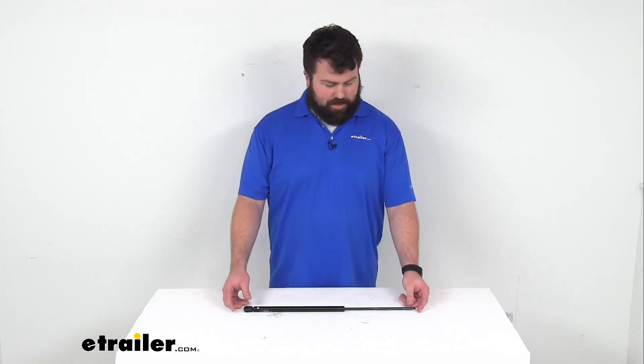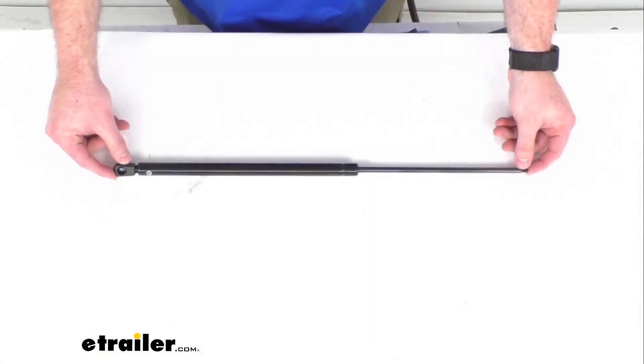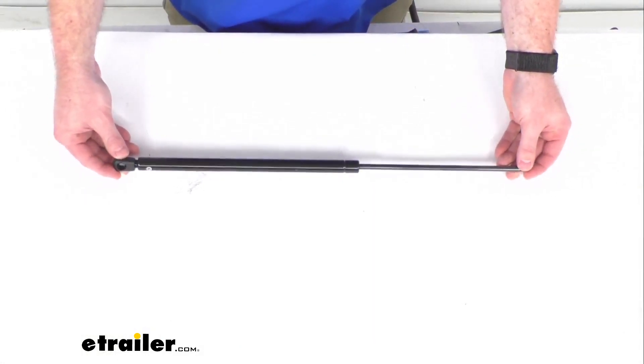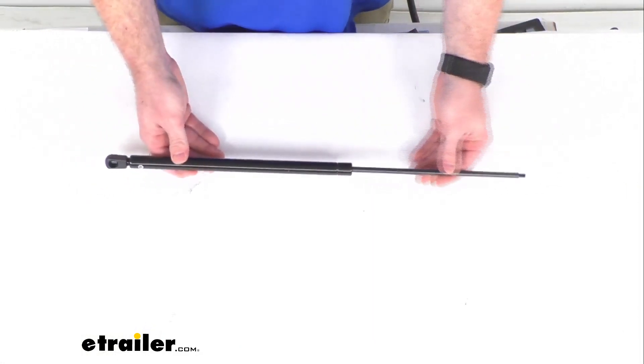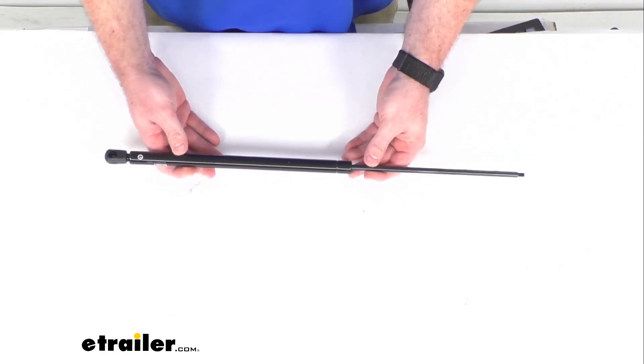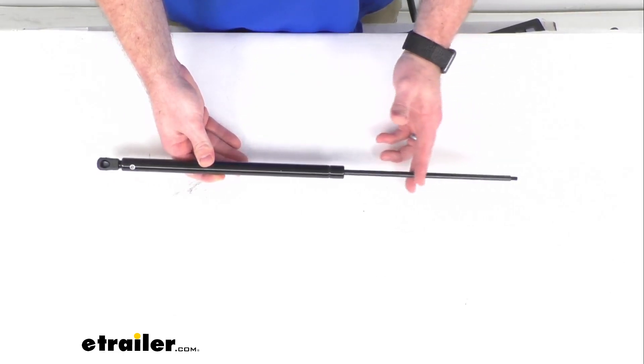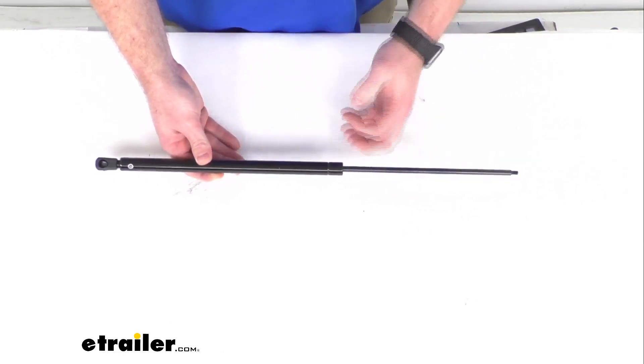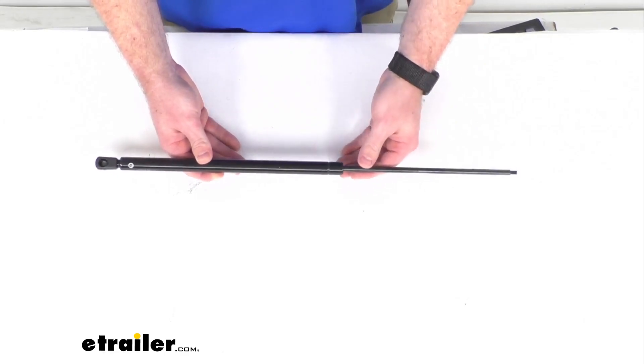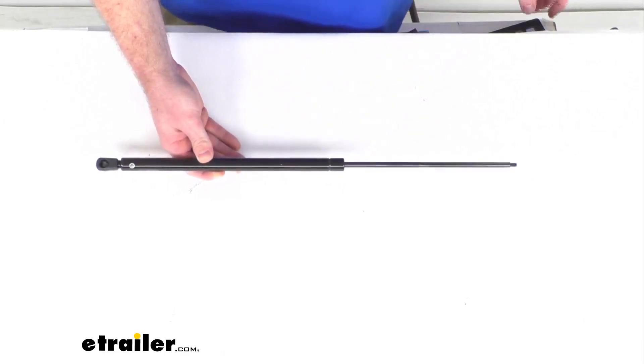Hi there, I'm Michael with eTrailer.com. Today we're going to take a quick look at this custom fit hatch lift support. This gas strut is going to replace one lift support arm on your vehicle's hatch. It is going to extend to help hold your hatch open and then gently compress while closing so you're not slamming your fingers or anything like that. This is a custom fit.